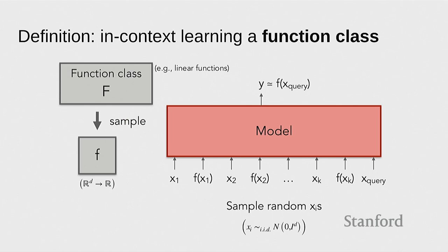So we want to formalize the problem. Here's a definition that captures at least one aspect of in-context learning — thinking of it in terms of a function class. This harks back to statistical learning theory: you define a function class, create examples from that class, and see if your learning algorithm can figure out which function it is. For example, take the set of all linear functions in 20 dimensions. You sample a function, then sample random d-dimensional input vectors x1, x2, ..., apply the function to each, and feed these as inputs to a model. The model should output the corresponding function value for the last input.